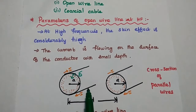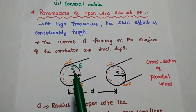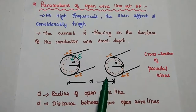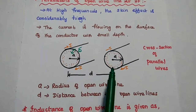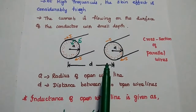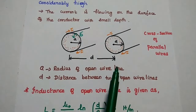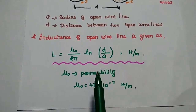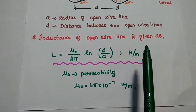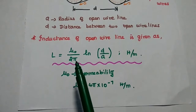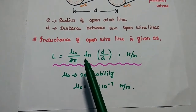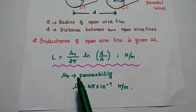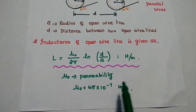This small depth is known as skin depth, denoted as delta. We can consider a parallel wire cross section where A is the radius of the open wire line and D is the distance between the lines. The inductance of the open wire line is given as L = (mu_0 / 2*pi) * ln(D/A), which is the natural logarithm of D over A. Its unit is Henry per meter. The value of mu_0 is 4*pi × 10^{-7} Henry per meter.